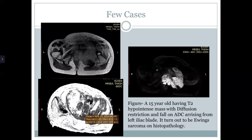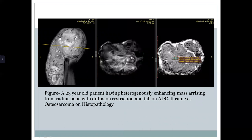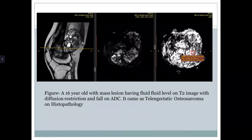Now we will discuss a few cases. A 15-year-old had a dense mass with diffusion restriction and a low ADC of 0.5, which turned out to be Ewing's sarcoma on histopathology. A 23-year-old had a heterogeneously enhancing mass with diffusion restriction and low ADC, which came out as osteosarcoma. A 16-year-old with a mass having high signal on T2 with diffusion restriction and low ADC came as chondroblastic osteosarcoma.